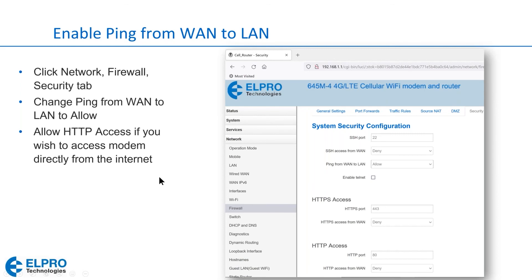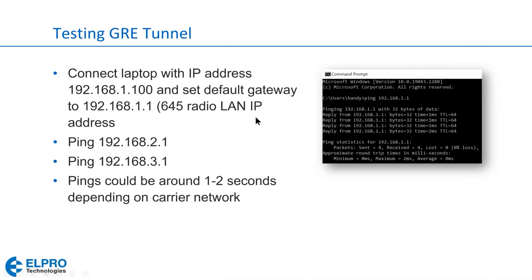Once connections are set up, connect the laptop with IP address 192.168.1.100, set the default gateway to the LAN IP address of the 645 connected to it, then do a ping command — ping the remote modem and also ping the remote PLC connected to it. This example shows a typical ping command. Your pings could be around one to two seconds depending on the carrier network. Some carriers are a little faster, some areas have stronger signal. In areas with poor coverage, pings could be quite a bit longer.